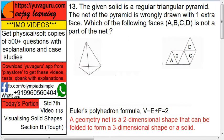Net means what? A two-dimensional shape that can be folded to form a three-dimensional shape. So this is three-dimensional and this is two-dimensional.